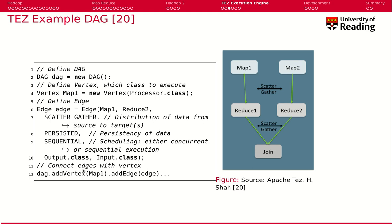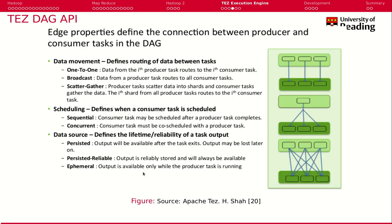We look into that. At the end, you put everything together by adding the vertices and the edges. The edge properties define pretty much how these producers and consumers work together. So you can have one process inside one of these computation tasks that communicates with one on the receiver side.